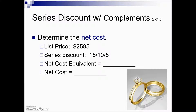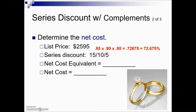In this example, we have a list price given with a series of three discounts: 15%, an additional 10%, and then an additional 5%. Using the same method, we take the complement of each one. A savings of 15% means you're paying 85%; a savings of 10% means you're paying 90% (100 minus 10); and an additional savings of 5% means you're paying 95% (100 minus 5). Multiplying these three together gives us our net cost equivalent rate as a decimal.